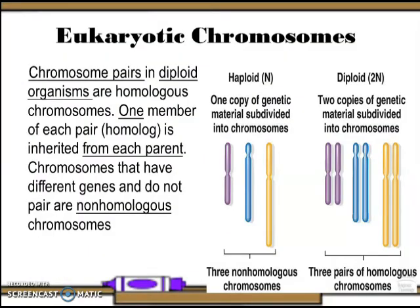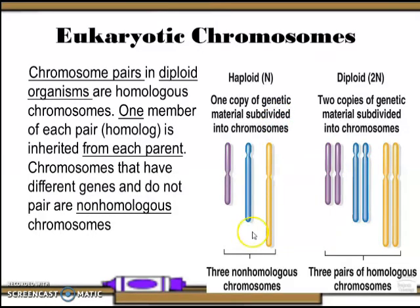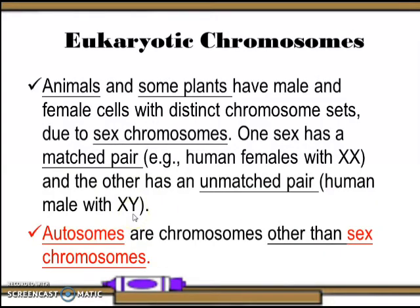Eukaryotes have multiple linear chromosomes in a number characteristic of the species. Most have two versions of each chromosome and so are diploid. Diploid cells are produced by haploid gametes that fuse to form a zygote, which undergoes development forming a new individual. Examples of diploid organisms are humans having 23 pairs and Drosophila melanogaster having four pairs. Chromosomes that have different genes and do not pair are called non-homologous chromosomes.